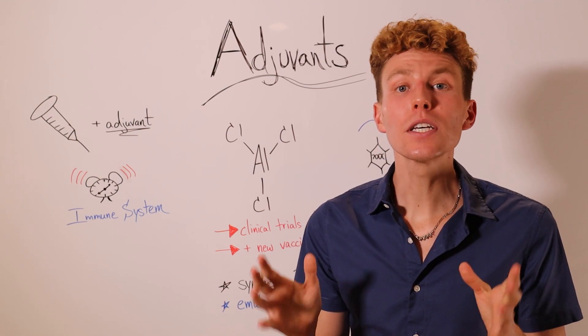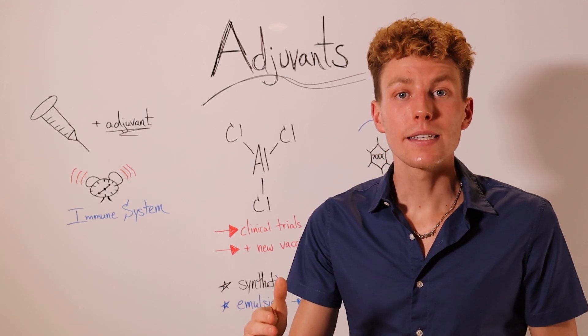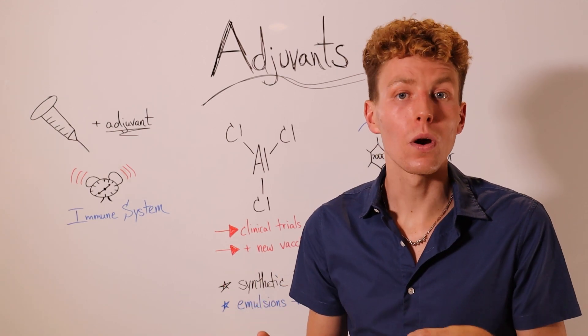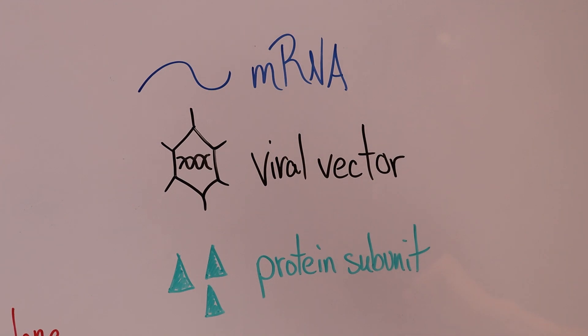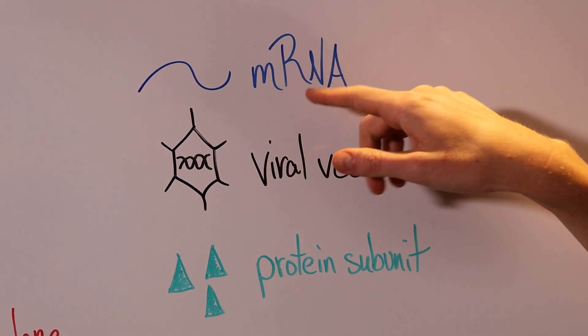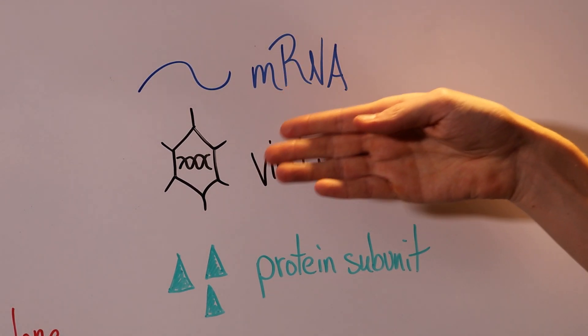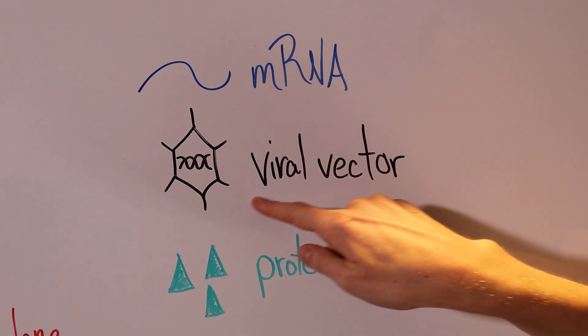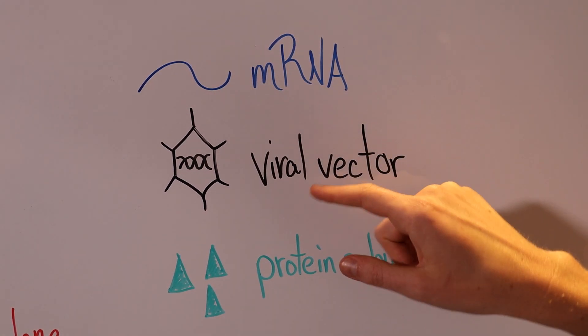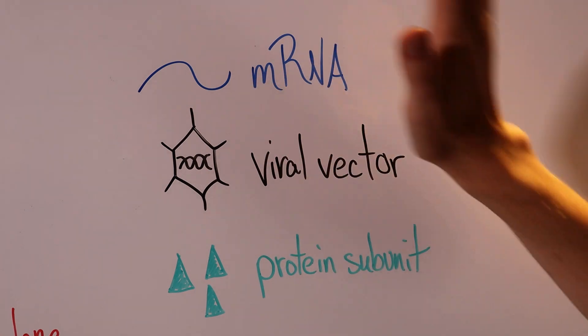Now if we use the COVID-19 vaccines as an example we can see how sometimes adjuvants are or are not used. The mRNA vaccines that were designed by Moderna or Pfizer-BioNTech and the viral vector vaccines that were designed by Johnson & Johnson do not use any adjuvants.